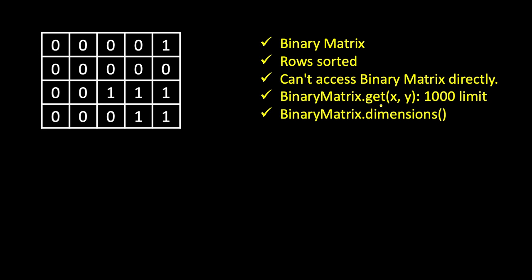You cannot access the binary matrix directly. You must use two APIs that the LeetCode problem provides: first, 'binaryMatrix.dimensions()', which returns a list of two values denoting rows and columns; second, 'binaryMatrix.get(x, y)', which lets you access the value at a given cell using its coordinates. There is a limit of 1000 — if your solution calls the get API more than 1000 times, it will not be accepted.